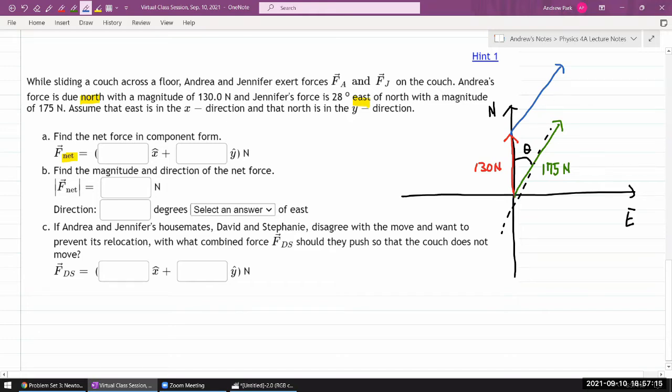That's the sum of those two vectors. Graphical method is great for illustrating it, but it's not quite easy for working out quantitatively. So what I want to do is I want to write down both Andrea's force and Jennifer's force in terms of their components. Andrea's force is easier. It's all in the north direction.